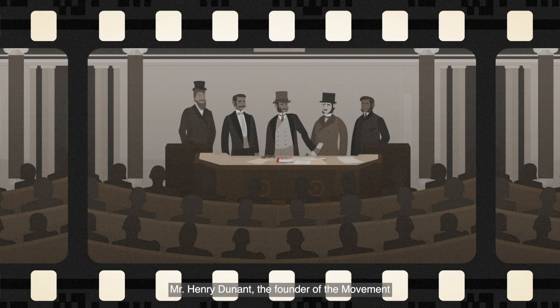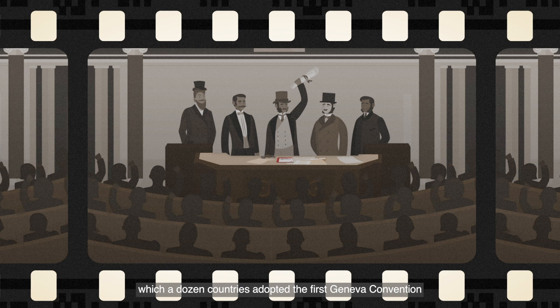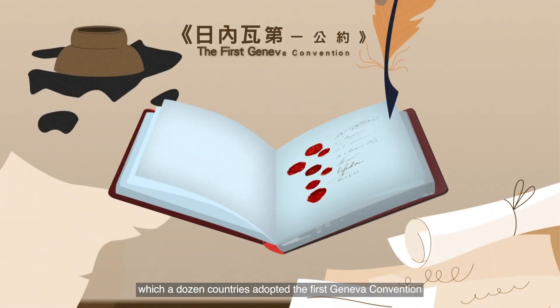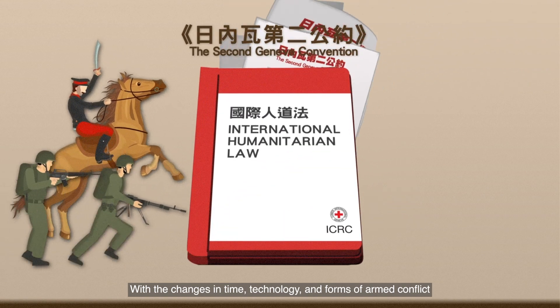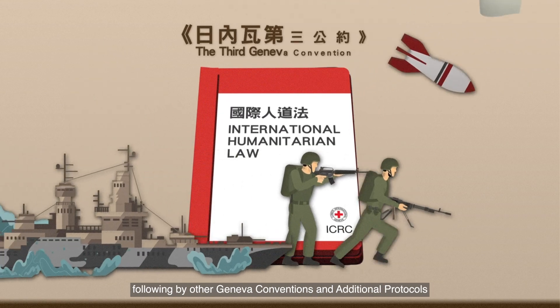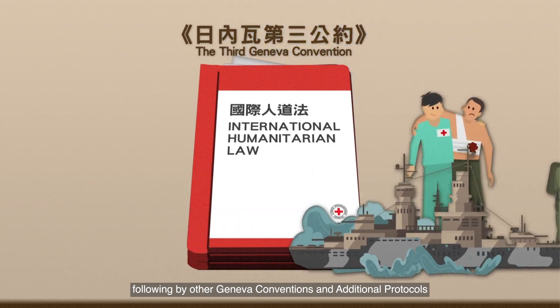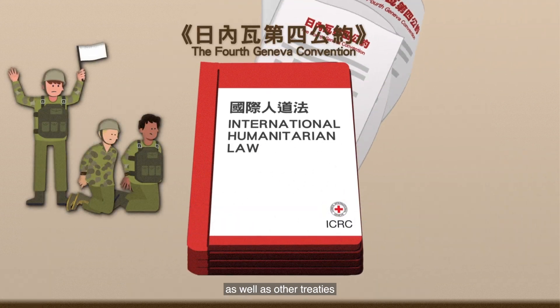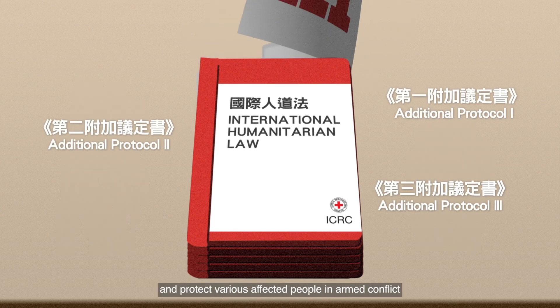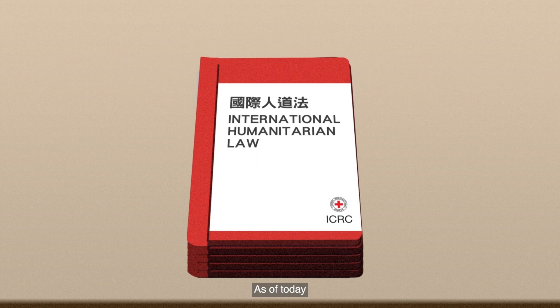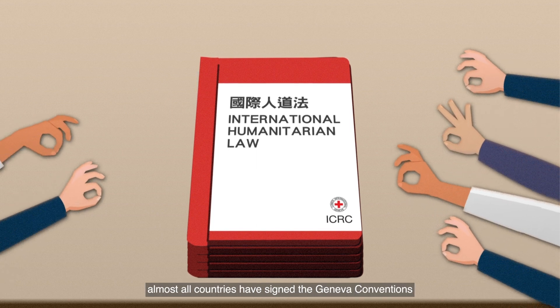In the 19th century, Mr. Henry Dunant, the founder of the movement, advocated and promoted the concept of IHL in Europe, which a dozen countries adopted as the first Geneva Convention. With changes in time, technology, and forms of armed conflict, following other Geneva Conventions and additional protocols, as well as other treaties, IHL came to cover a wider range and protect various affected people in armed conflict. As of today, almost all countries have signed the Geneva Convention.